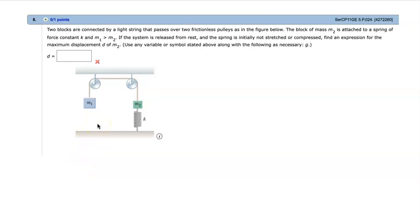Hello, Dr. Nutt here. So we are discussing this problem from chapter 4. Two blocks are connected by a light string that passes over two frictionless pulleys, as in the figure below.